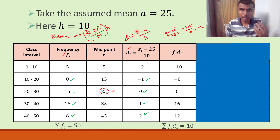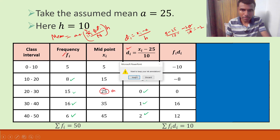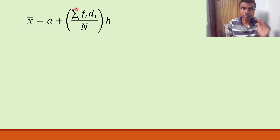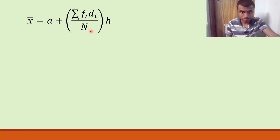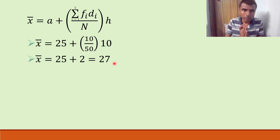Now we substitute into the formula. We have a = 25, sigma fi * di = 10, n = 50, h = 10. So x̄ = 25 + (10 / 50) × 10 = 25 + (10 × 10 / 50) = 25 + 2 = 27. So x̄ = 27.